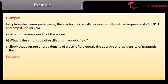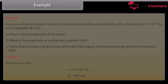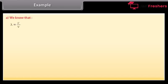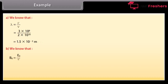Solution: Given ν = 2 × 10¹⁰ Hz and E₀ = 48 V/m. We know λ = c/ν; putting in the values gives a wavelength of 1.5 × 10⁻² m. We know B₀ = E₀/c; putting in the values gives an amplitude of the magnetic field of 1.6 × 10⁻⁷ T.